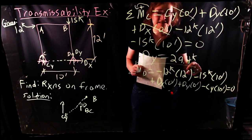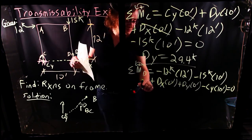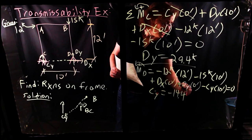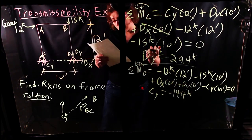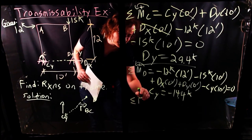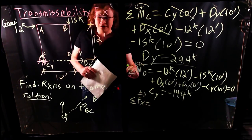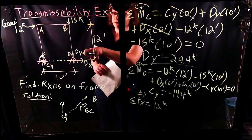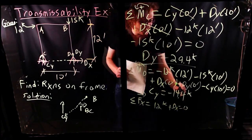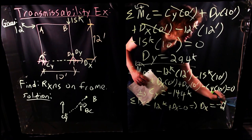So C-Y equals negative 14.4 kips. Finally, to get D-X — the only remaining reaction — I'll do a simple summation of forces in the X direction, to the right positive: 12 kips plus D-X equals zero, because we're in static equilibrium. Solving for that, D-X equals negative 12 kips, which means 12 kips to the left.